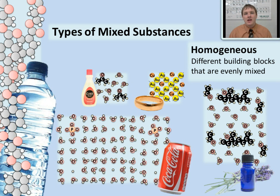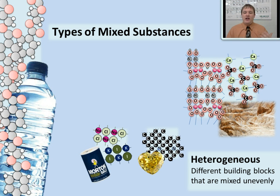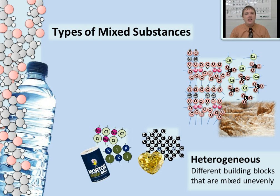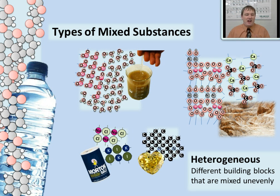When you have substances made up of different building blocks that are mixed unevenly, you have a heterogeneous mixture. Here is clay crystals mixed with limestone crystals — because these crystals are different and form chunks of different substances mixed unevenly, it's a heterogeneous mixture. Another example is sand and water: you have silicon dioxide sand crystals and water molecules in the same place. They are different building blocks — one crystal and one type of molecule — but they are mixed unevenly, with a big chunk of silicon dioxide and a separate area of water molecules. That makes it a heterogeneous mixture.